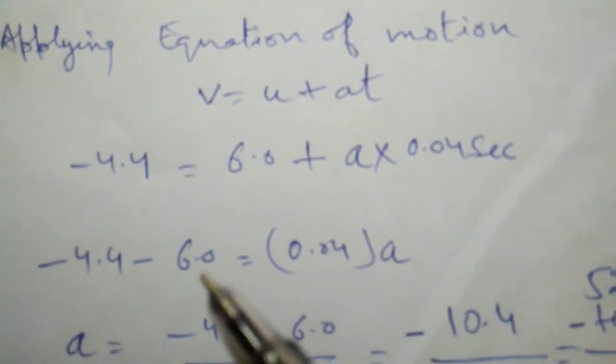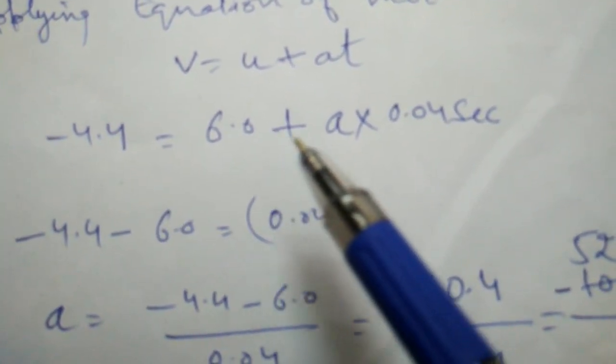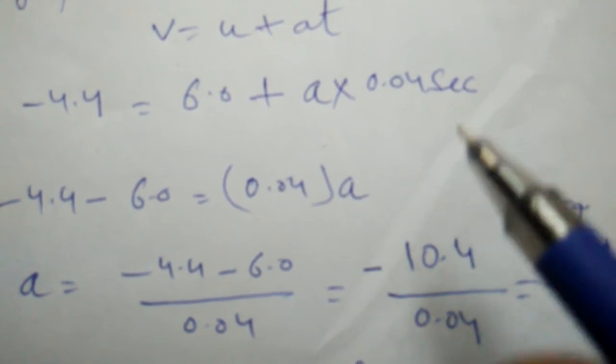Here after putting the values, v is equal to minus 4.4, u is 6.0, and t is 0.04 seconds.